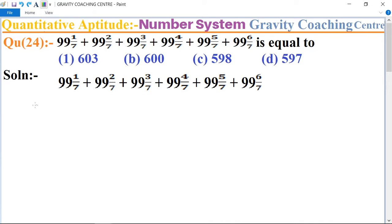First we separate the whole number and fractions. So 99 is 6 times, so we multiply 99 with 6. So 6 into 99 plus, and the fraction numbers are 1 upon 7 plus 2 upon 7 plus 3 upon 7.